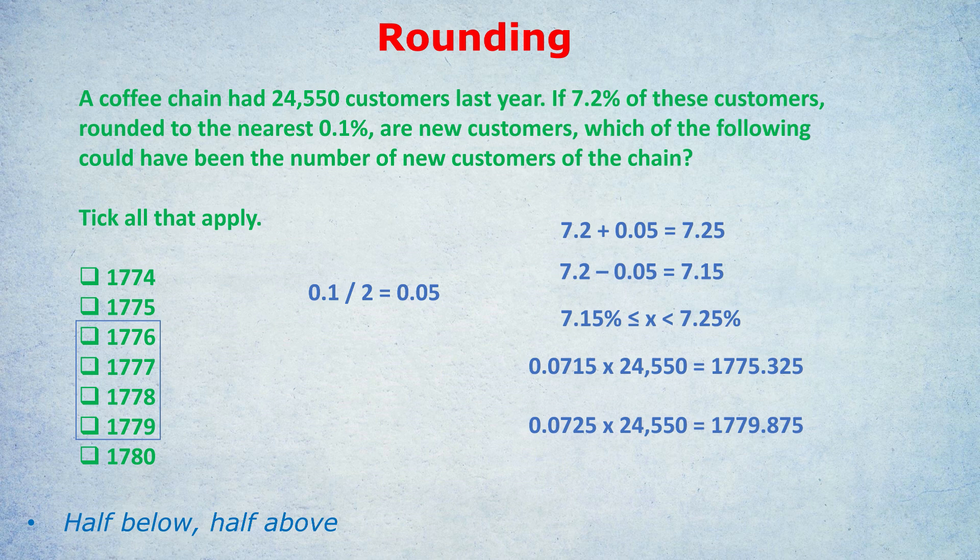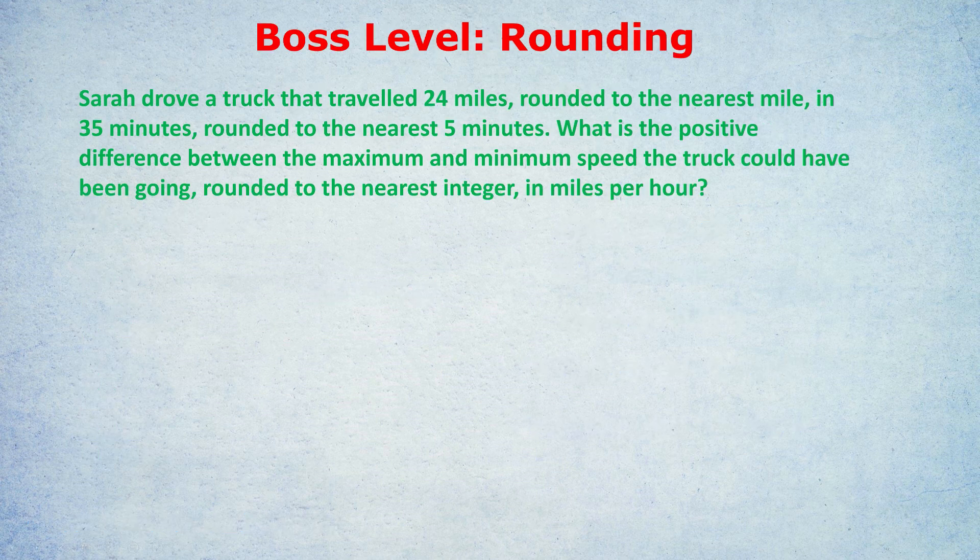Finally, we're going to have a boss-level rounding question. Sarah drove a truck that traveled 24 miles, rounded to the nearest mile, in 35 minutes, rounded to the nearest five minutes. What is the positive difference between the maximum and minimum speed the truck could have been going, rounded to the nearest integer in miles per hour? That is a lot of rounding in one question.